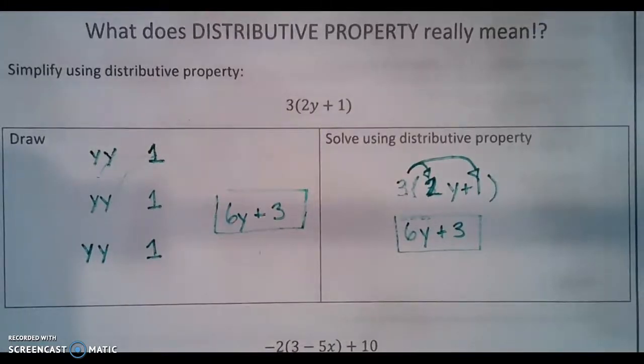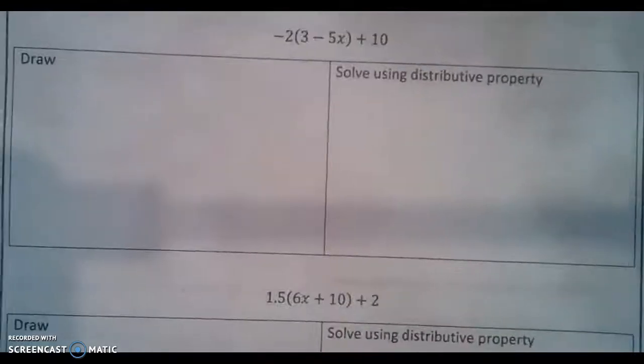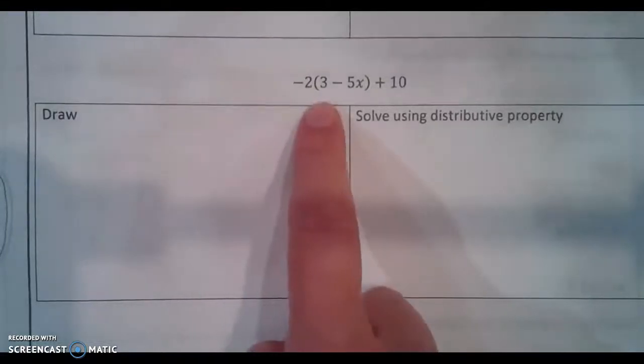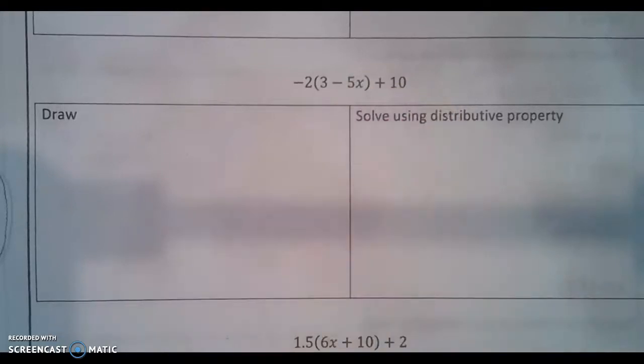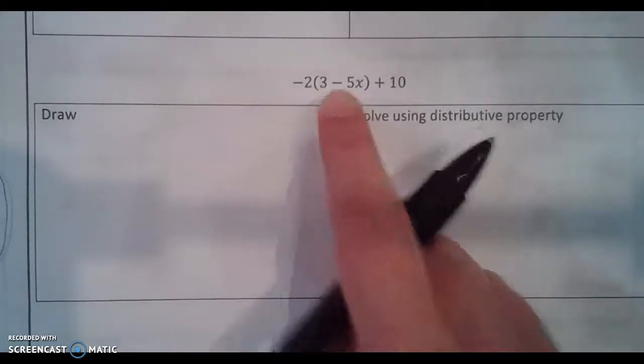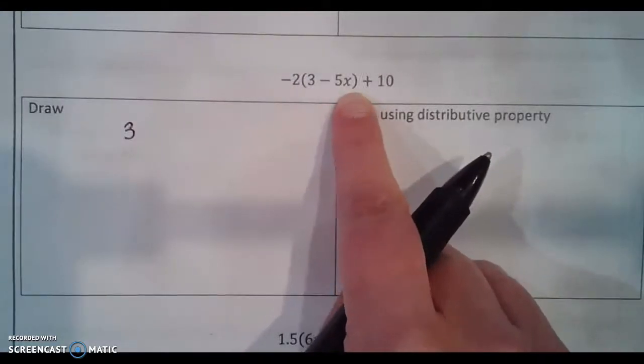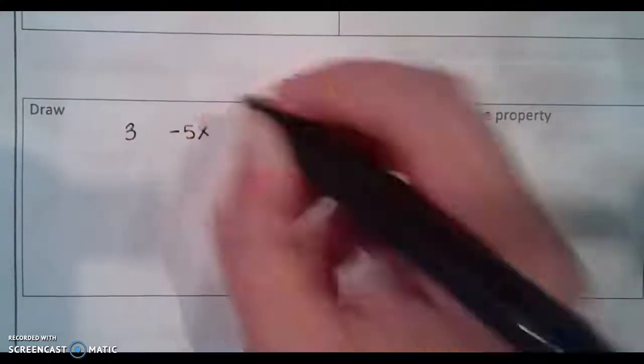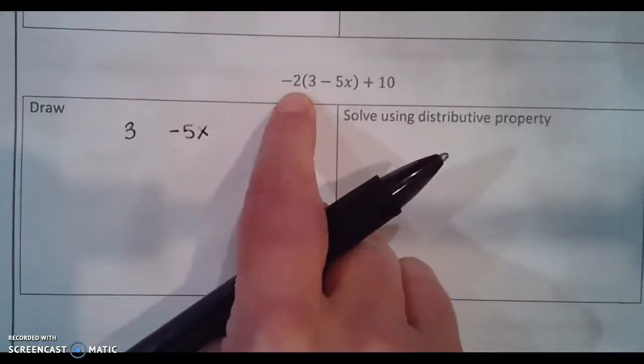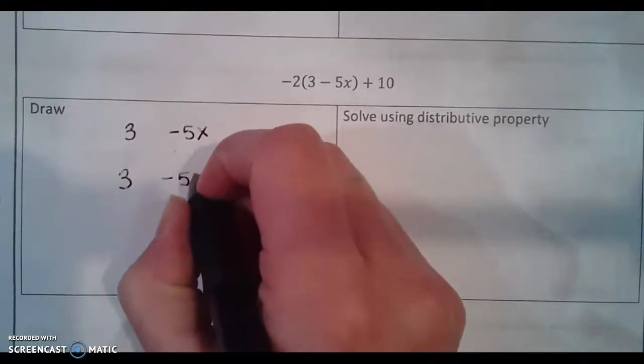So let's actually go to the next one because it's just a little bit more complicated. In this one we have negative 2 times 3 minus 5x plus 10. So if we were to draw a picture of this we would look at what's inside of our parentheses, 3 and negative 5x. And so we could just put it like this. We're not going to draw it all out. But we don't just have this once. We have it twice.